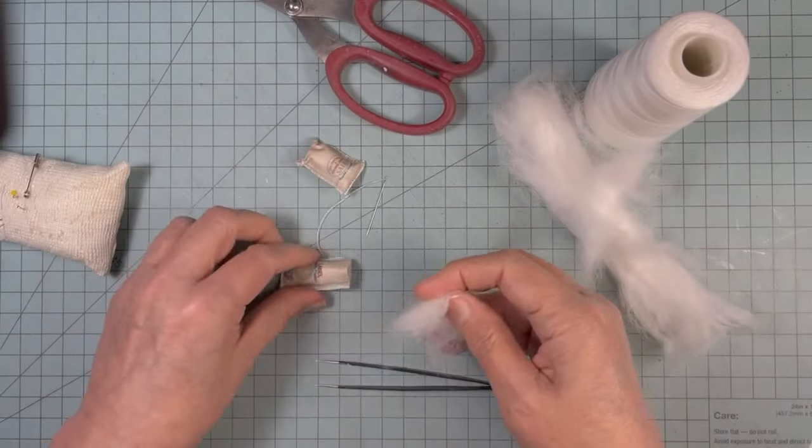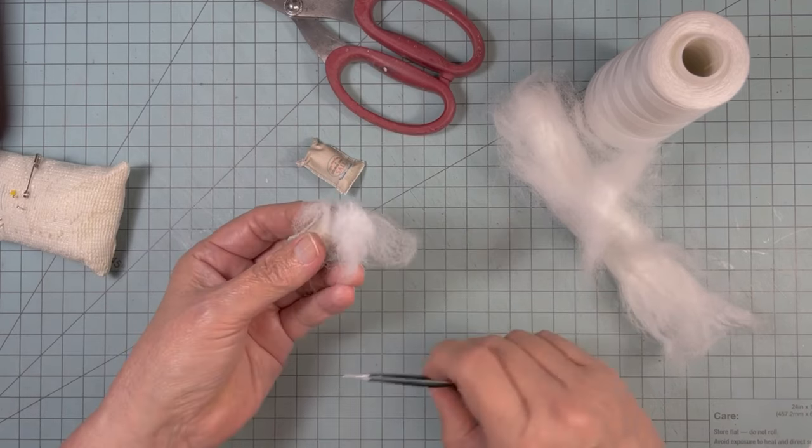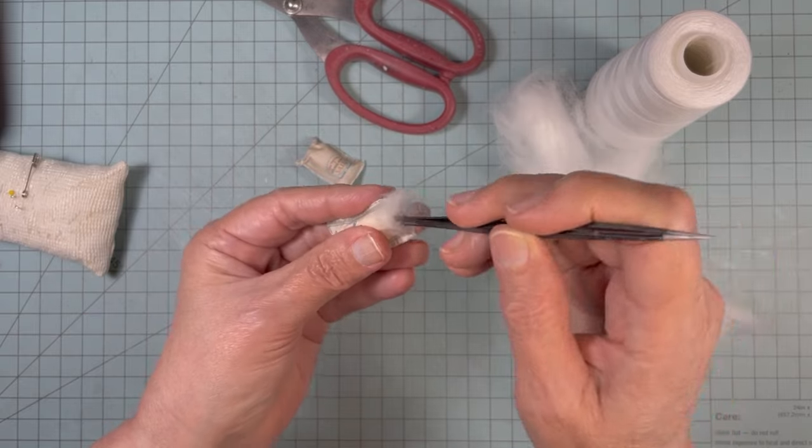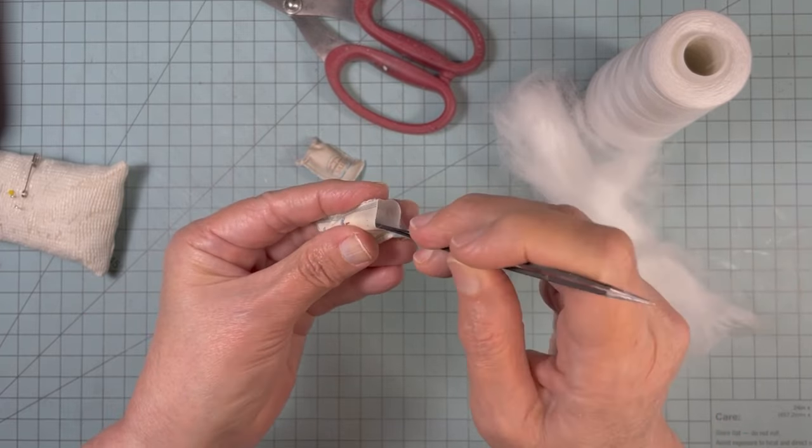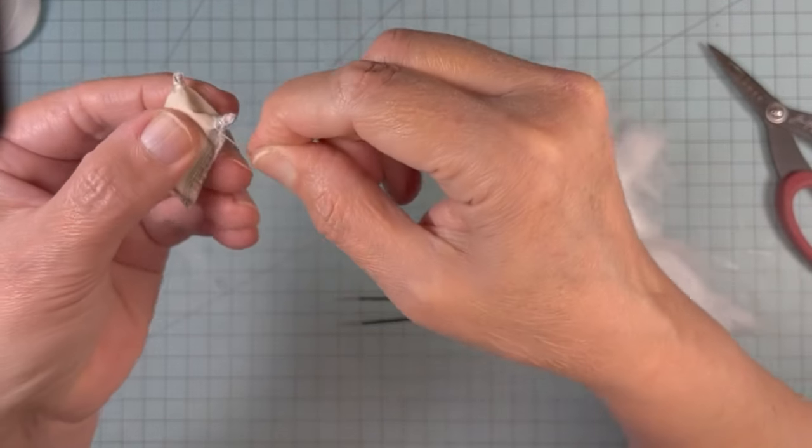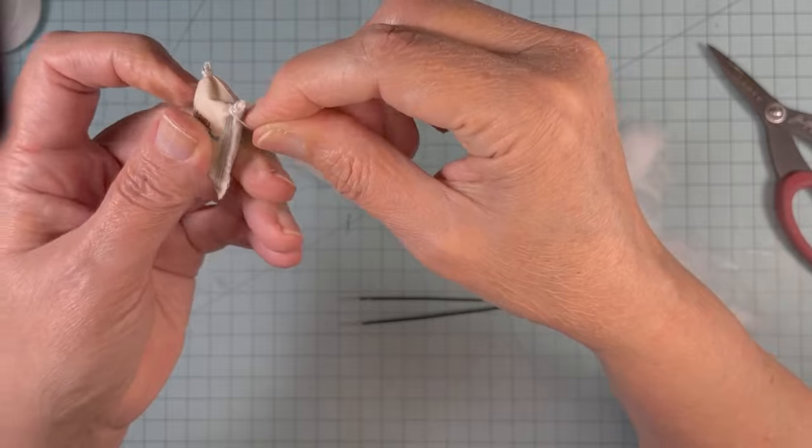Here I'm using some cotton that was saved from some vitamin bottles that I use. I'm firmly stuffing the bags. Here I'm creating those handles that you usually see on vintage bags of feed.